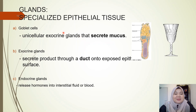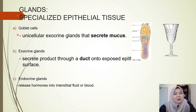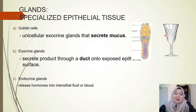Next are glands, which are specialized epithelial tissue. The first type is goblet cells — these are unicellular exocrine glands that secrete mucus. We call them goblet cells because the shape of the cells resembles a goblet, which is a drinking glass.